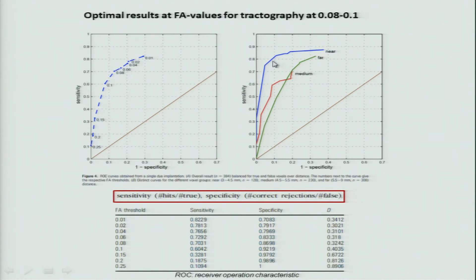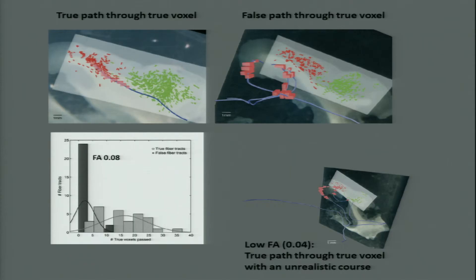We were able to show that diffusion MR, even when using individual axons as markers, can nicely reconstruct pathways. As a second approach, we also tried to quantify tractography on the basis of axon trajectories visible anatomically with myelin stains in the white matter as well as the gray matter.